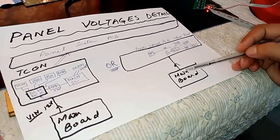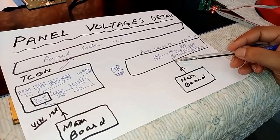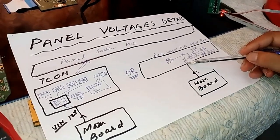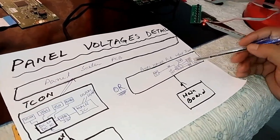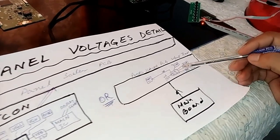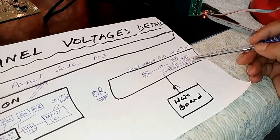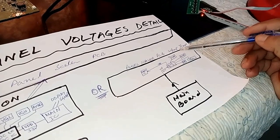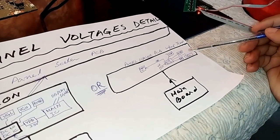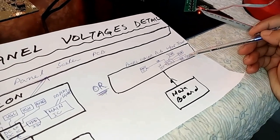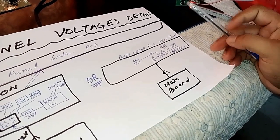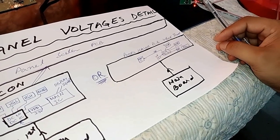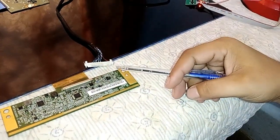In the second case, the mainboard sends the signal via LVDS cable directly into the panel scaler PCB. Here a DC-to-DC IC is present which generates all these voltages: VCOM, AVDD, VGH, and VGL. I will explain these voltages one by one and check them on the panel scaler.